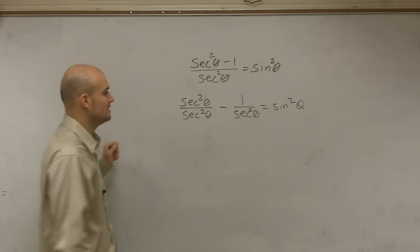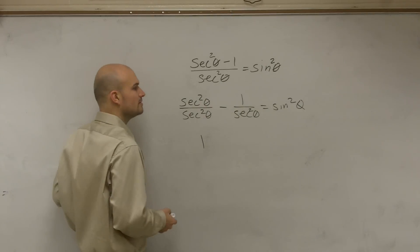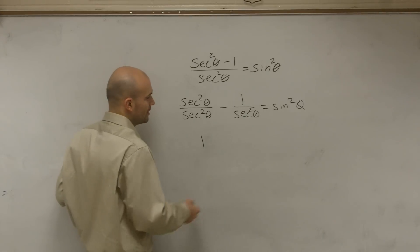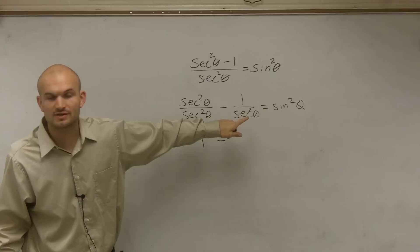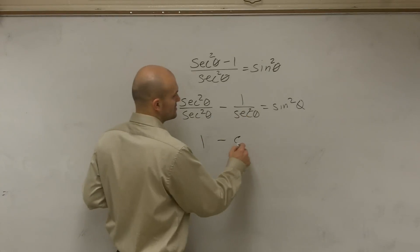Now, by writing it this way, secant squared of theta divided by secant squared of theta equals 1, minus the reciprocal of 1 over secant squared is going to be cosine squared.